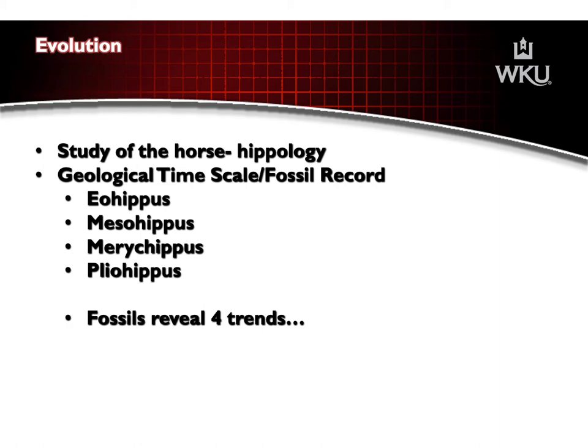However, the most recent fossils of the Eohippus have been found in rocks of about 50 million years old in Europe. This is the Eohippus — the earliest ancestor of the present horse.